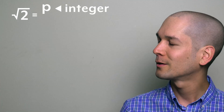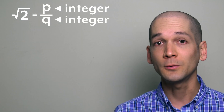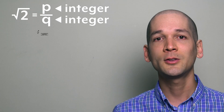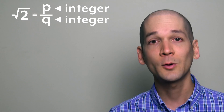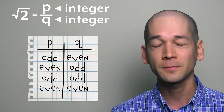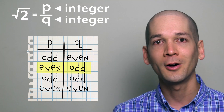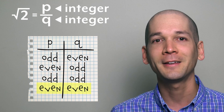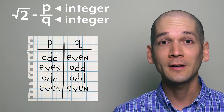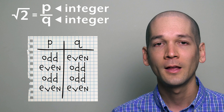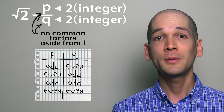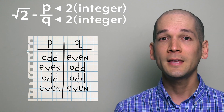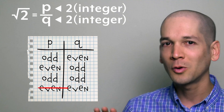Let's assume that the square root of 2 is a rational number. We'll write it as the integer p over the integer q. Let's also assume that this fraction is in reduced form, so p and q have no common factors aside from 1. p and q can each be odd or even, giving four possible combinations: odd and even, even and odd, odd and odd, and even and even. If both p and q are even, they both have 2 as a factor, which contradicts the assumption that p and q share no common factors aside from 1. So p and q cannot both be even.